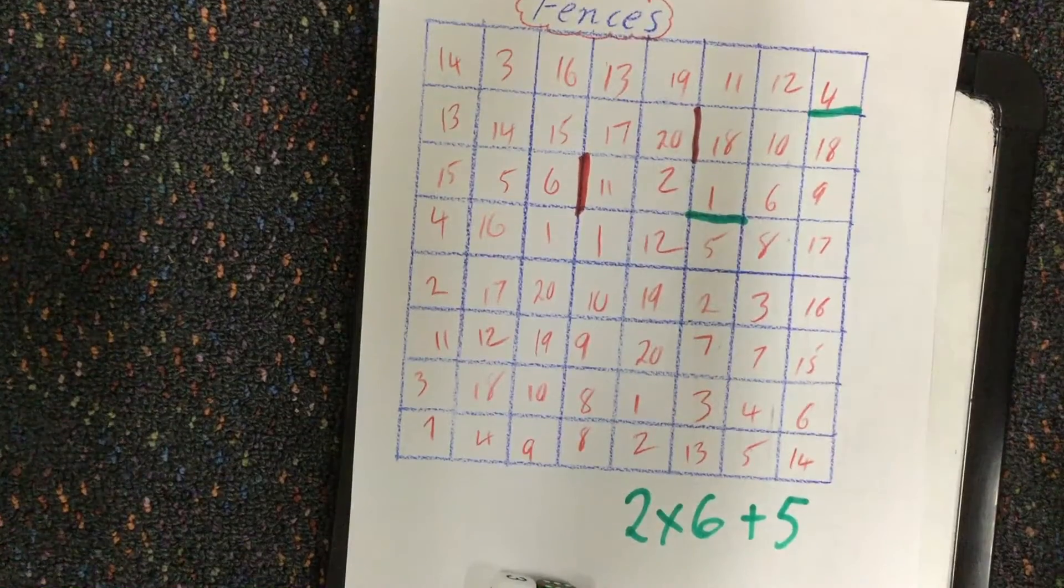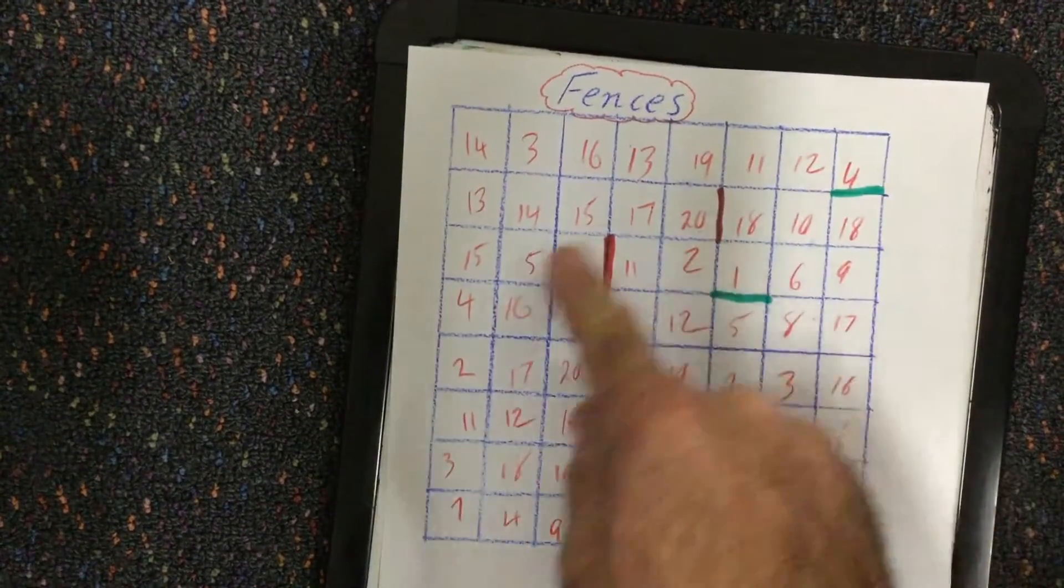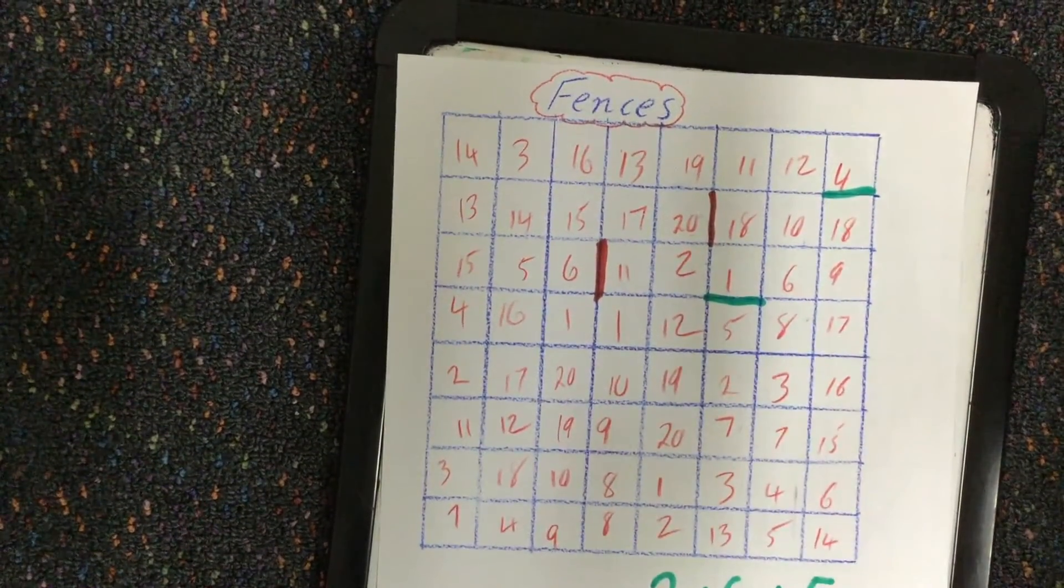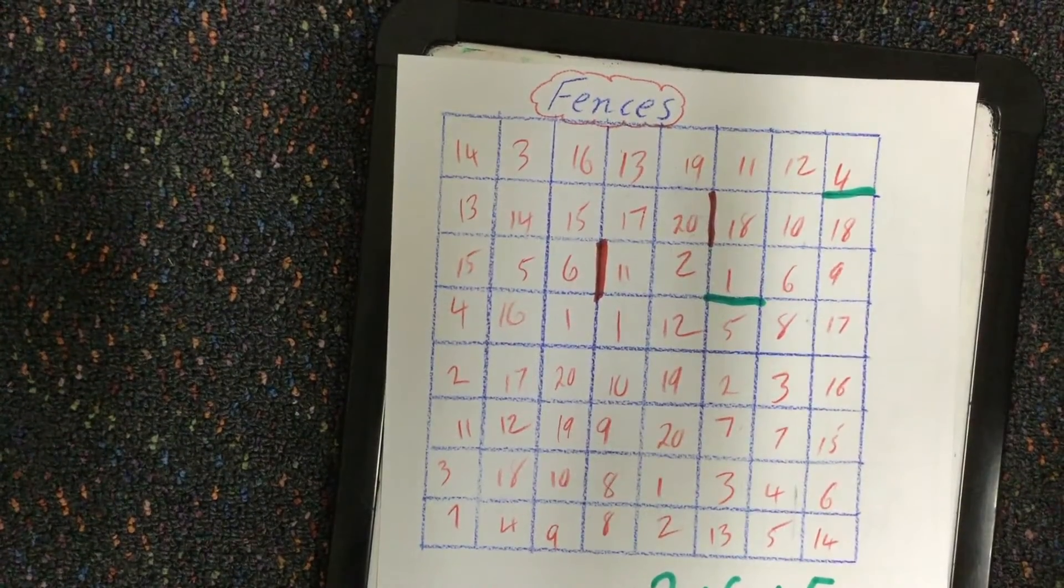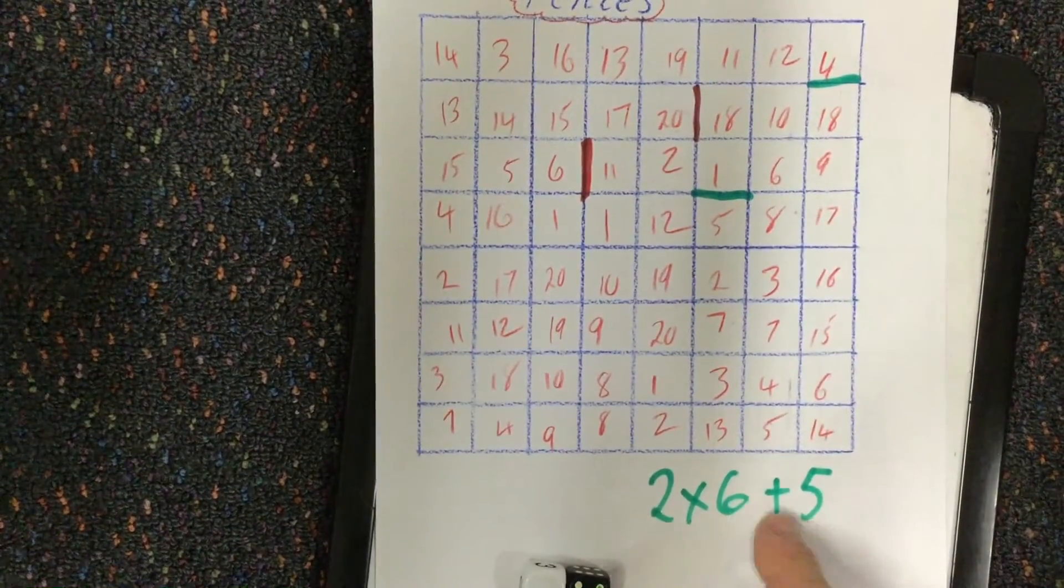You could do it on your own and time yourself. How long it takes to complete the entire grid. You could write your equations down. So when you look back, you'd say, oh look at the ones I'm doing now.